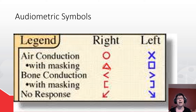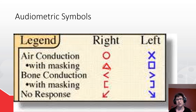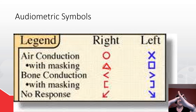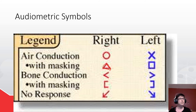Let's talk about how you remember the symbol change from unmasked air conduction to masked air conduction. Here's how I remember it: if the unmasked is a circle and you squish it, you can get a triangle. If it's an X and you unfold it, you have a box. You may have something else that works for you.